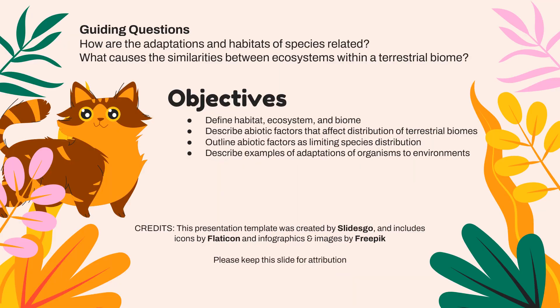On that note, we have accomplished our objectives. We talked about vocabulary words — habitat, ecosystem, and biome. We discussed the abiotic factors affecting the distribution of terrestrial biomes, the optimal zones and stress zones that limit species distribution, and lots of examples of adaptations of organisms to their environments. Hopefully you're feeling confident answering our guiding questions: how adaptations and habitats are related, and what similarities in abiotic factors among ecosystems cause them to constitute a single biome.